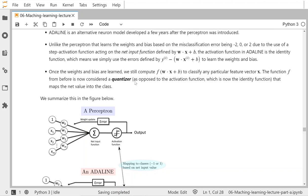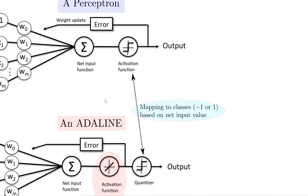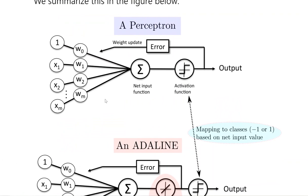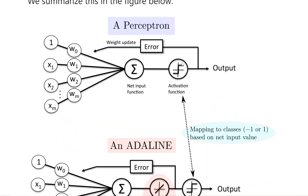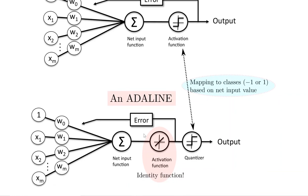The function f is now called a quantizer instead of an activation function — that's just a linguistic shift. In the ADALINE diagram, the quantizer maps to negative one or one, the same as before. The difference is the activation function is an identity like y equals x, and we compute and optimize at that step before the quantizer.